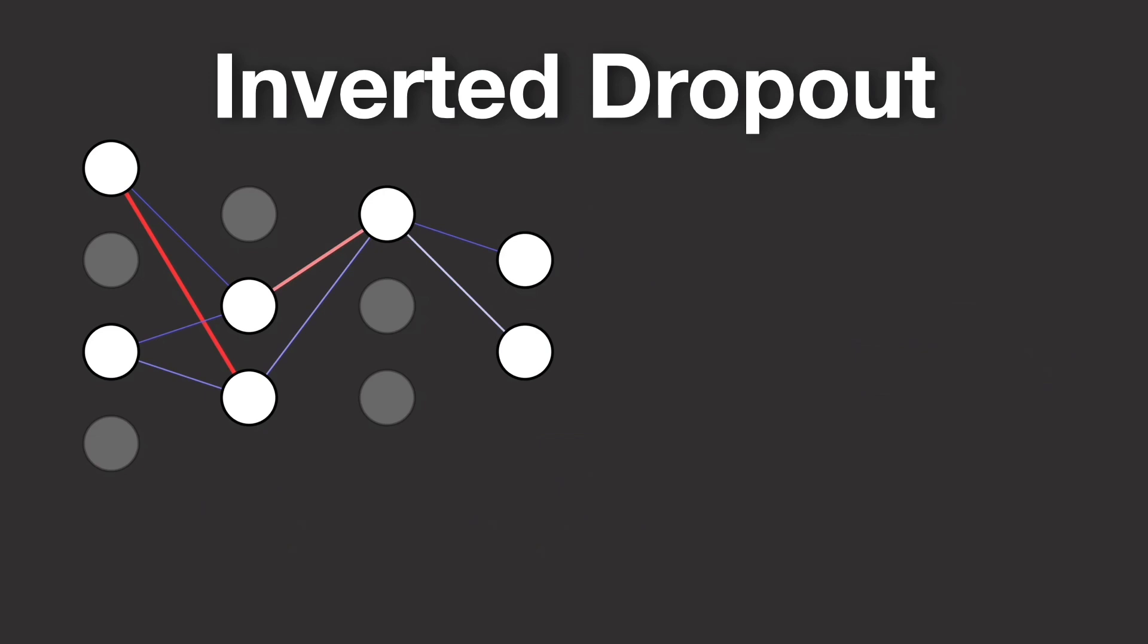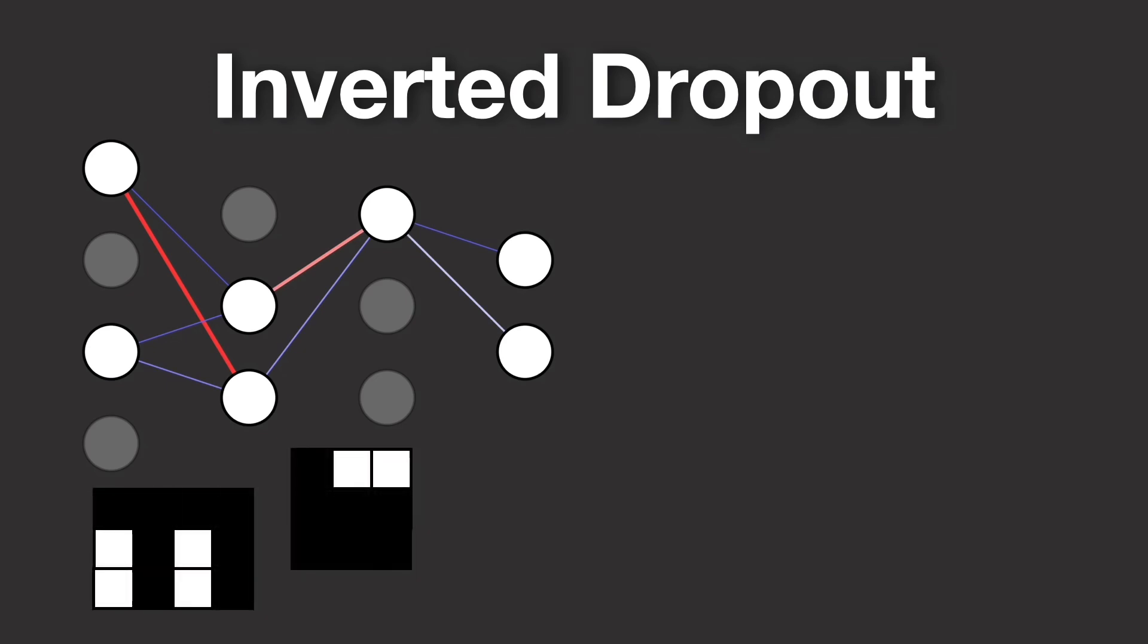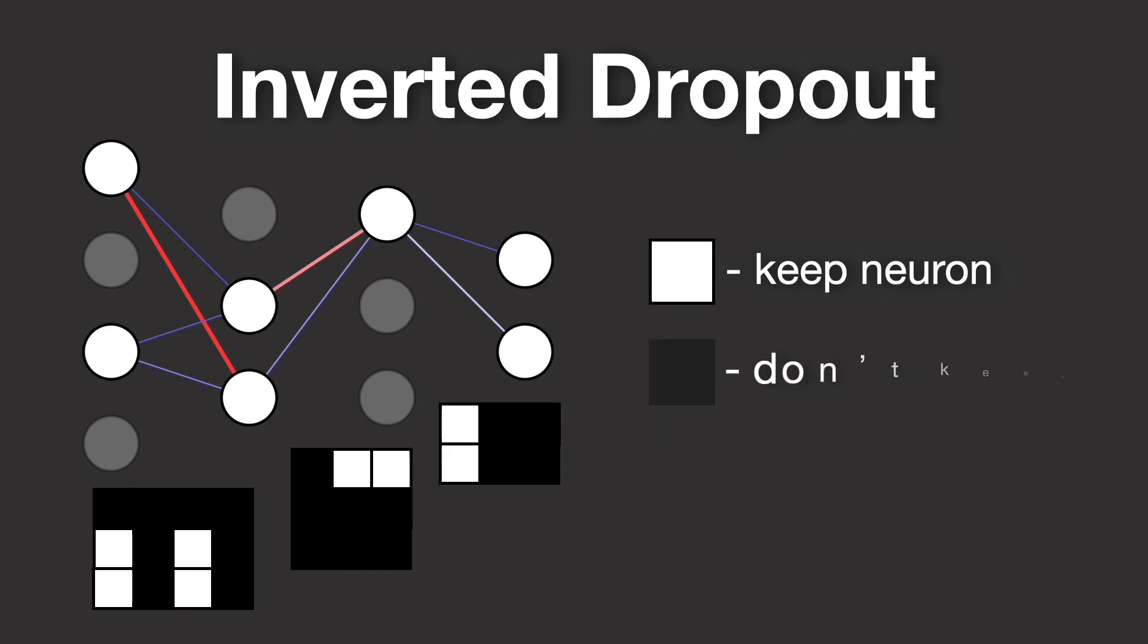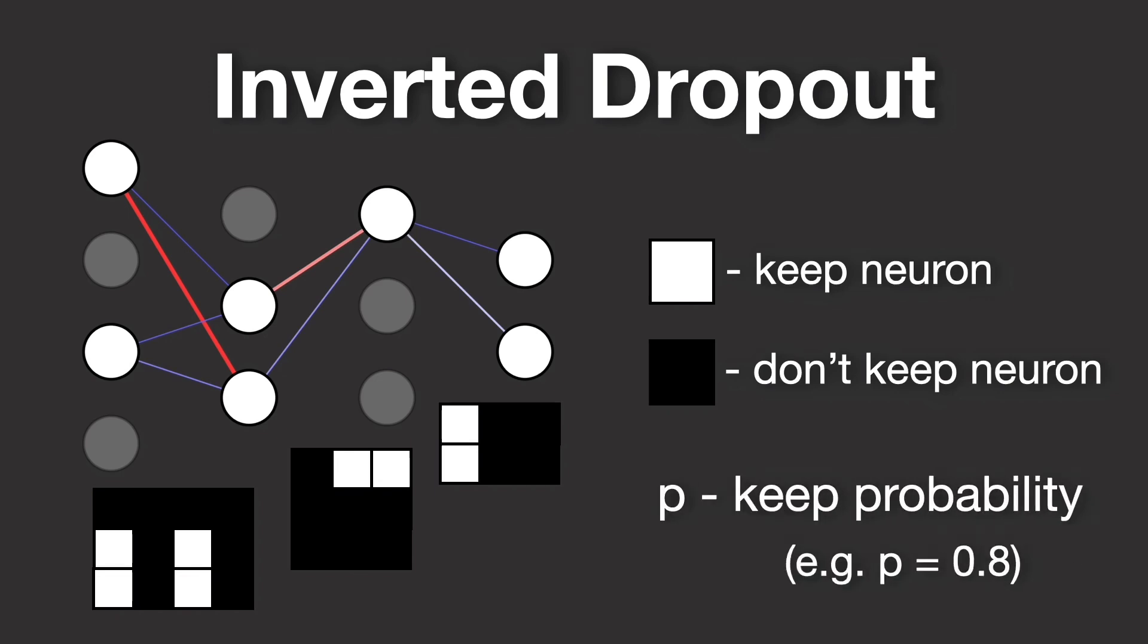One common way to implement dropout is through a technique known as inverted dropout. In this method, for each layer, you generate a dropout mask, a matrix with the same shape as the activations of that layer. Each element in this mask is 1, or keep the neuron, with a probability equal to the keep rate, let's say 0.8, and 0, drop the neuron, with a complementary probability of 0.2.